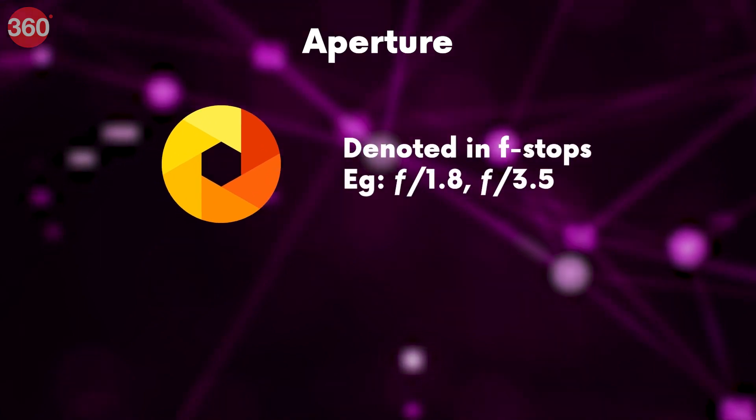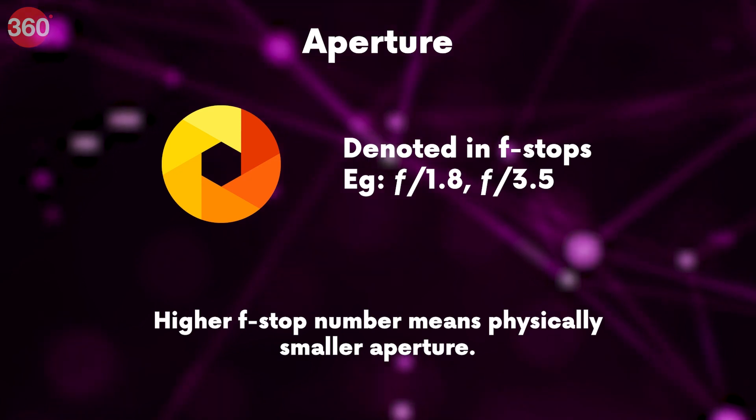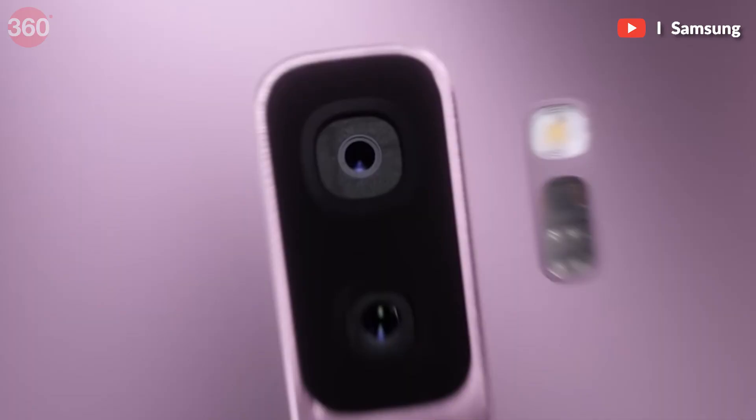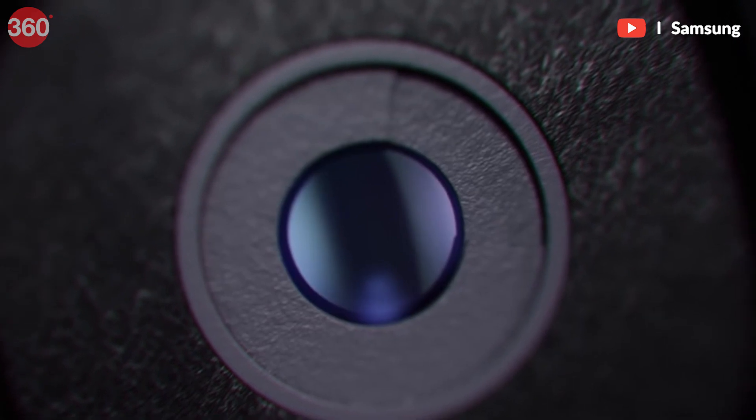Aperture refers to how wide your lens can open — a wider aperture lets in more light but also creates more background blur, which can be desirable or not depending on the shot. Aperture is expressed in f-stops: a higher f-stop value means a smaller aperture, and a lower f-stop means a larger aperture. Smartphones generally have a fixed aperture, unlike DSLRs, though a few like the Samsung Galaxy S9 featured a variable dual-aperture system.